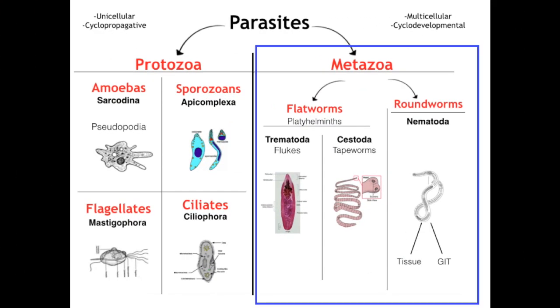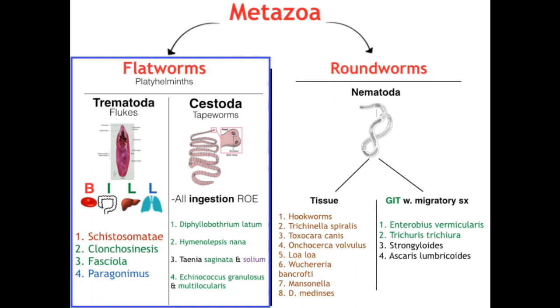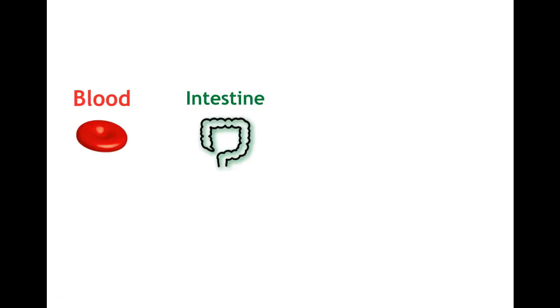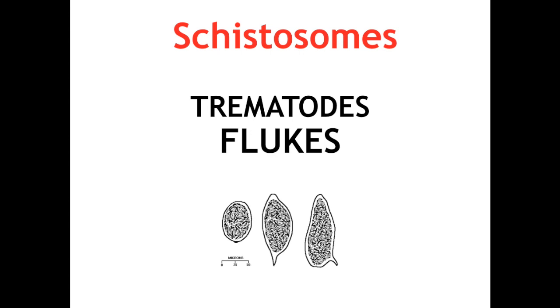The trematodes belong to the kingdom Metazoa, so they are multicellular parasitic worms. From there, worms are either round or flat, and the flukes are in the flatworm phylum — Platyhelminthes — in the class Trematoda. Today we are going over the schistosomes, or the blood flukes, which are not only the most high-yield for Step 1, but are unique from the rest of the flukes in many ways.